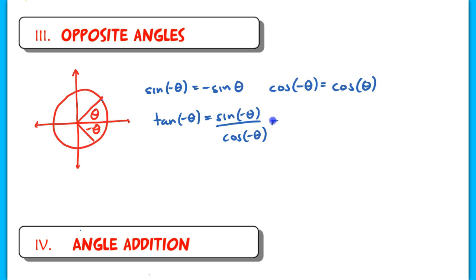And then because I've already established that the sine of negative theta is equal to negative sine theta, I'm just going to use substitution there. And the cosine of negative theta is the same as the cosine of theta. Now negative sine theta over cosine theta is just negative tangent theta.